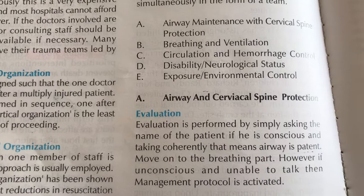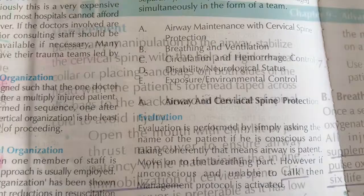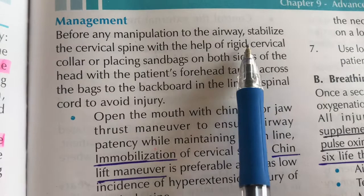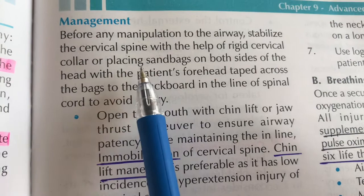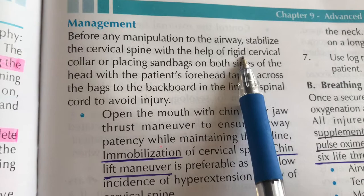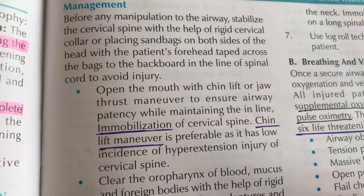If our patient is unconscious or unable to talk, we proceed to airway maintenance. Before any manipulation to the airway, we must stabilize the cervical spine. We use a rigid collar, and we may also place sandbags on both sides of the head with the patient's forehead taped across to the backboard in line with the spinal cord to avoid injury. The most easily available method is the rigid collar.